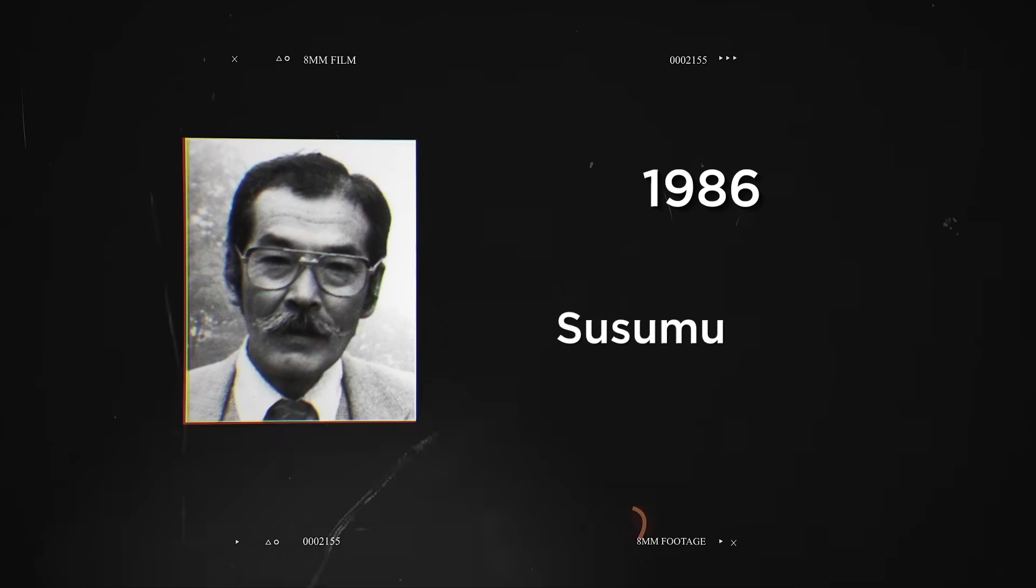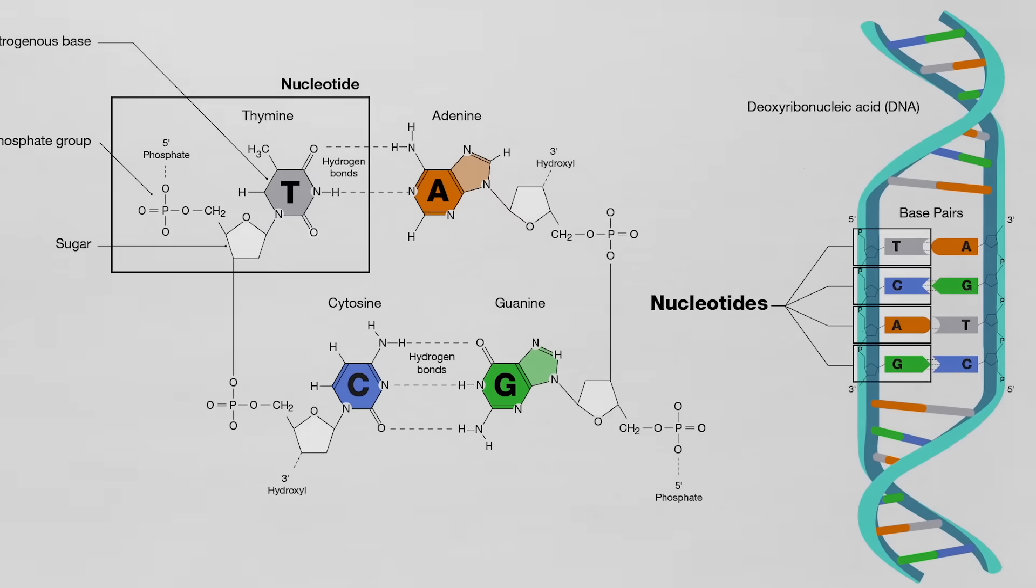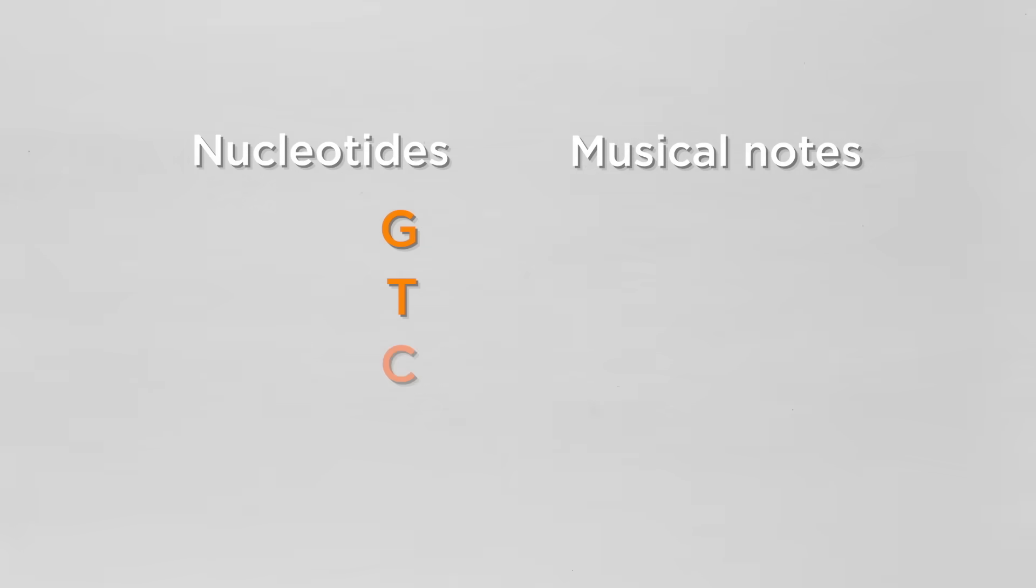In 1986, the Japanese geneticist Suzumu Ono discovered DNA music by converting the nucleotide bases G, T, C, and A to the musical notes A, C, G, and D, respectively.